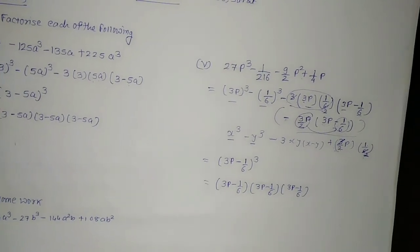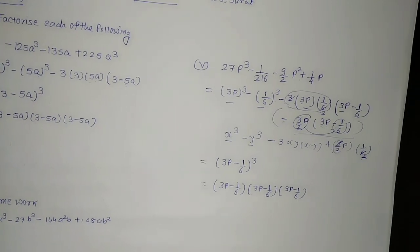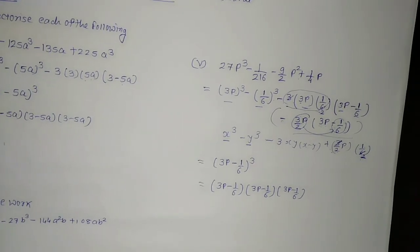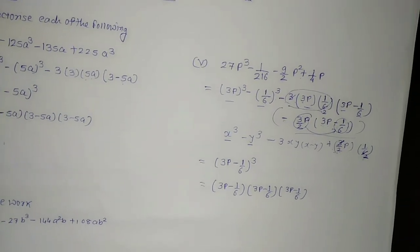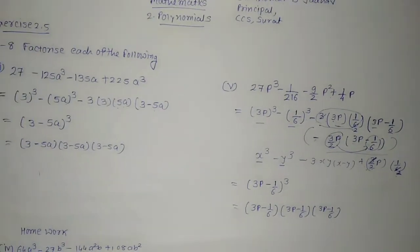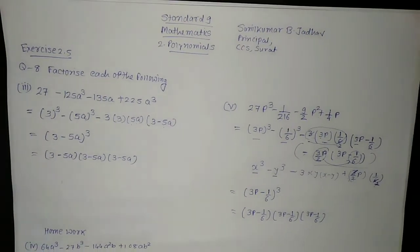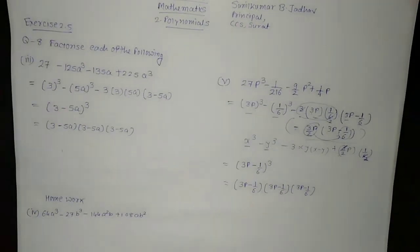So this is how you can do the factorization of the given expanded form using the formula x minus y whole cube equals x cube minus y cube minus 3 into x into y into bracket x minus y. I hope you have understood. Click the like button if you like this video and share with your friends. In the next video we will see further more details. Thank you so much.